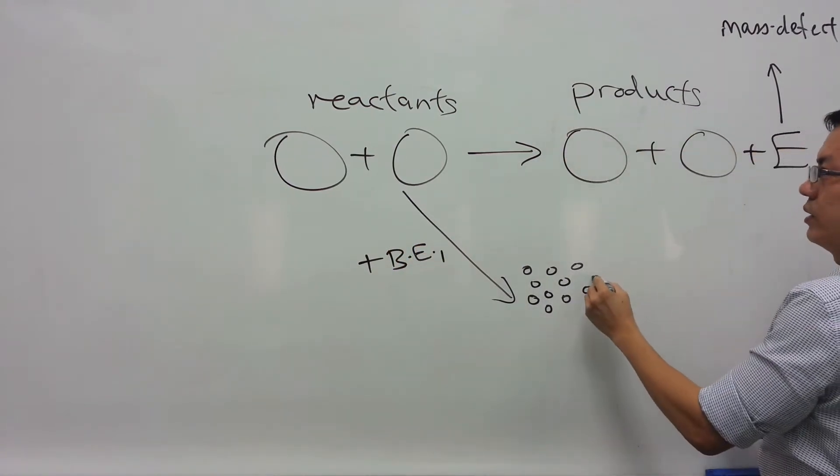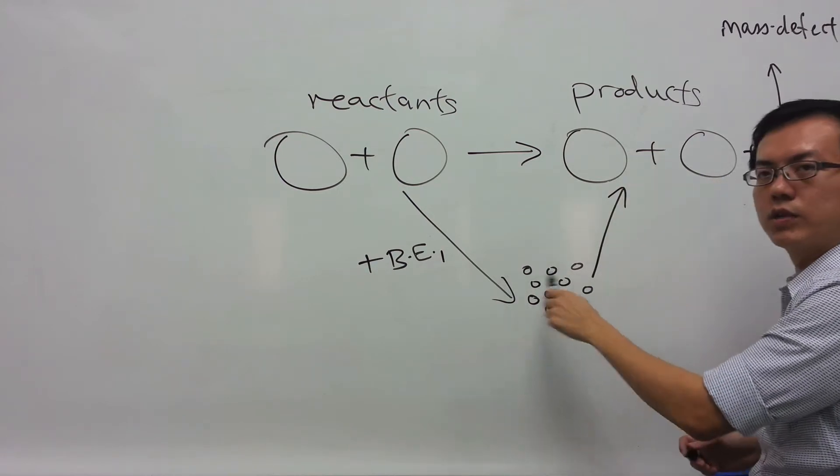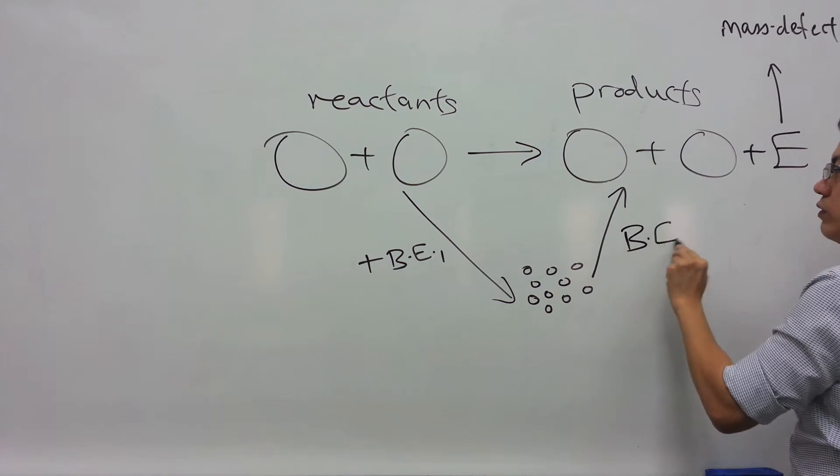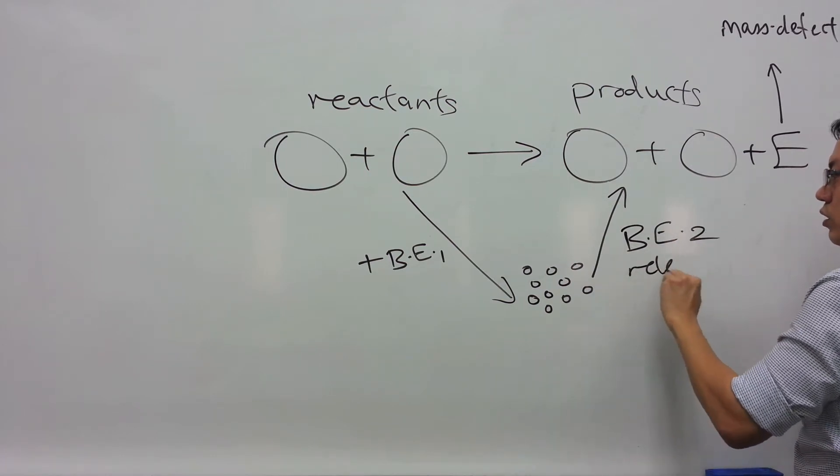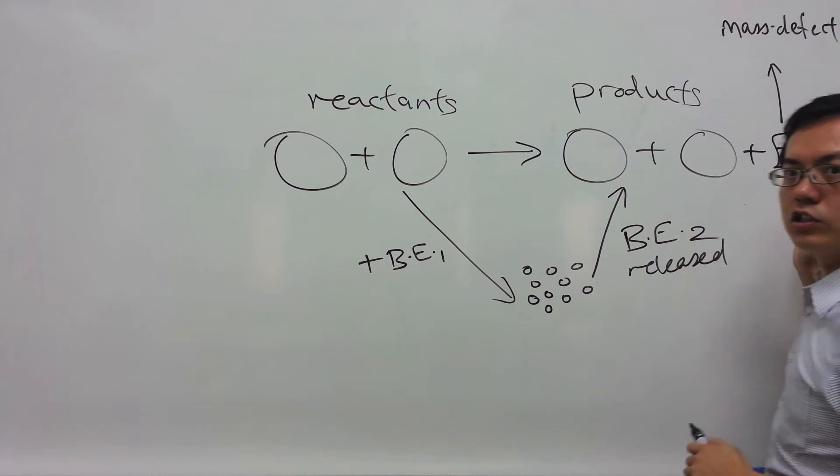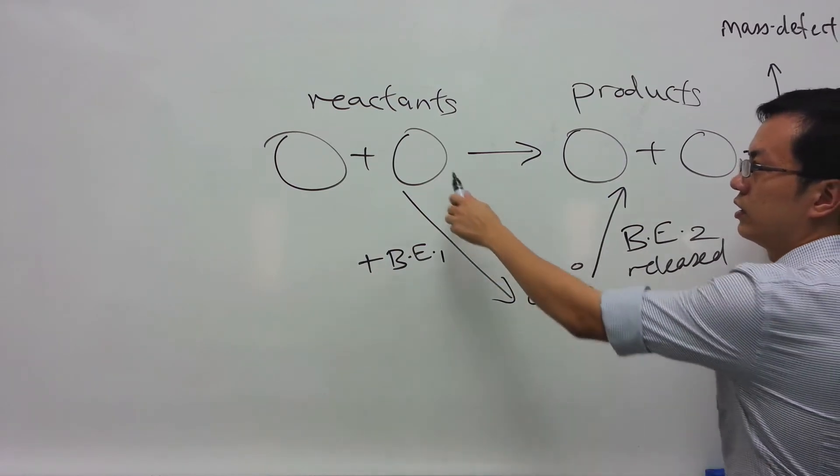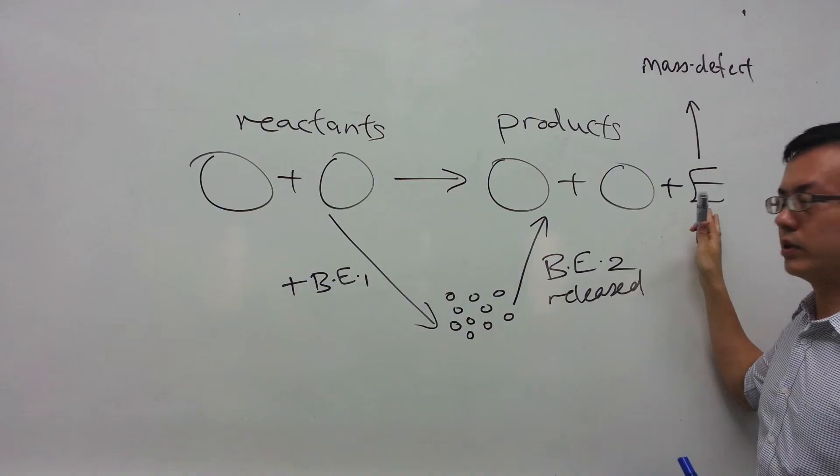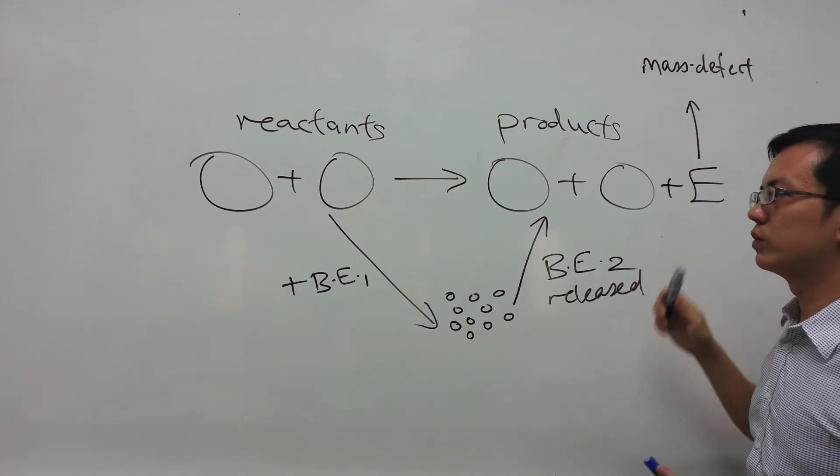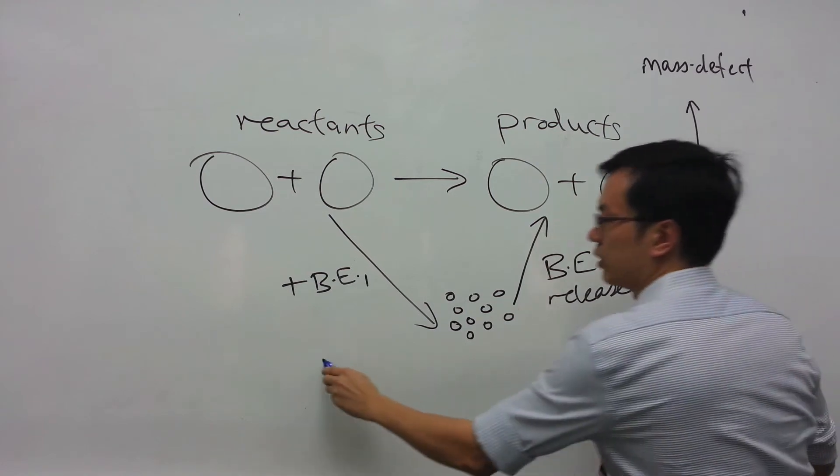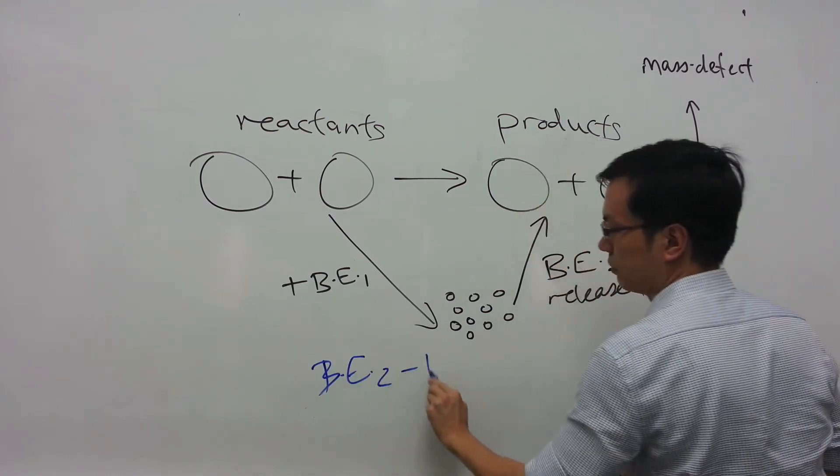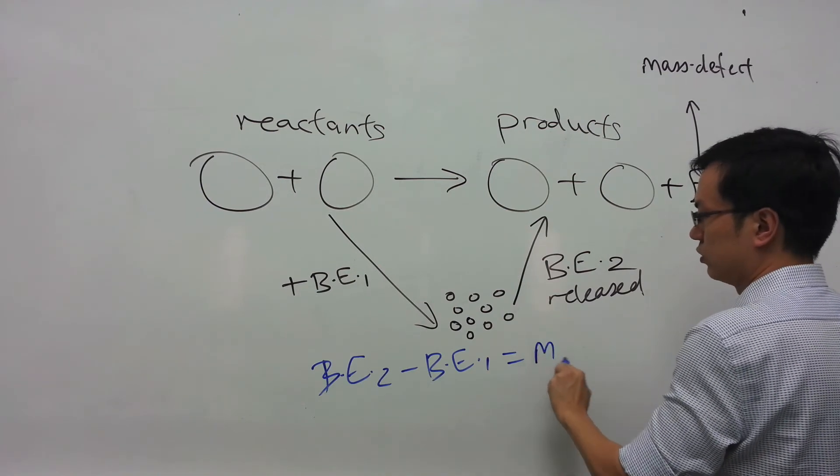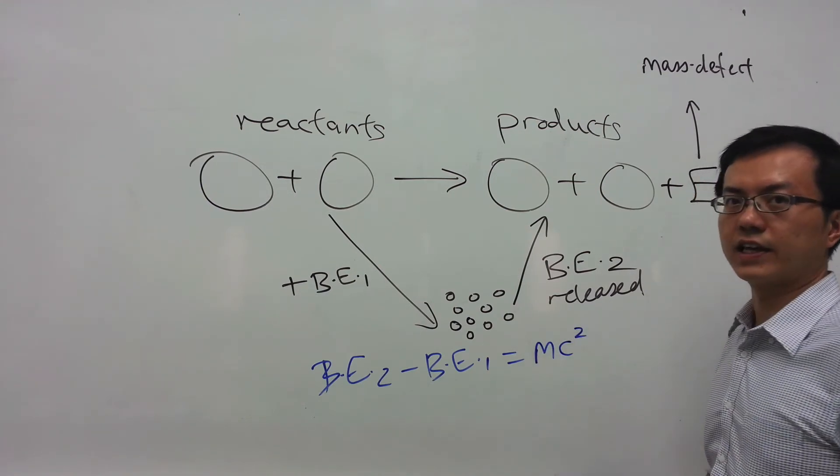When we assemble the products from these constituent nucleons, a certain amount of energy will be released. Let's call it BE2. If there is energy released in the reaction, it means that BE2 will be more than BE1. The amount of energy released will be equal to the difference between BE2 and BE1. This energy is equal to the mass defect multiplied by the square of the speed of light.